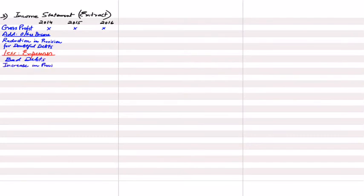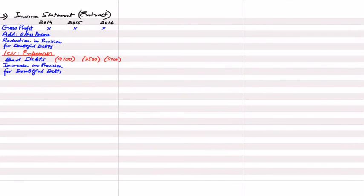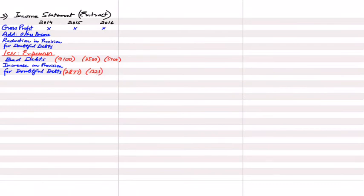Expenses include bad debt (irrecoverable debt) and increase in provision. Bad debts in 2014 total 9,100; in 2015 total 3,500; in 2016 total 5,700. For provision: in 2014 the new provision of 2,877 is an expense; in 2015 the increase of 1,323 is an expense; in 2016 the decrease of 744 becomes other income. This completes the income statement extract.